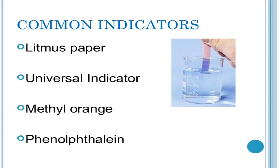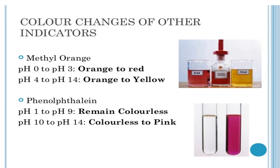Phenolphthalein has a pH range of 8.3 to 10: it is colorless at pH 8.3 or less and red at pH 10 or more. The benefit of this system is that it is very cheap and no instruments are required. The drawback is that it is not an accurate system of measurement, and it cannot be accurately applied to already colored solutions.